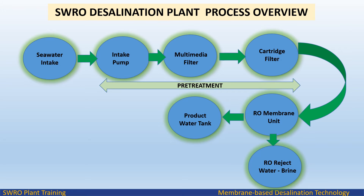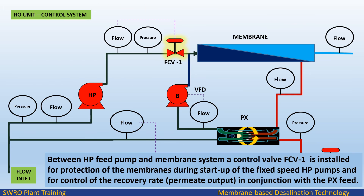In the SWRO desalination plant process diagram overview, feed water from the cartridge filter passes to the RO membrane unit. Between the HP feed pump and the membrane system, a control valve FCV1 is installed for protection of the membranes during start-up of the fixed-speed HP pumps and for control of the recovery rate and permeate output in conjunction with the PX feed.